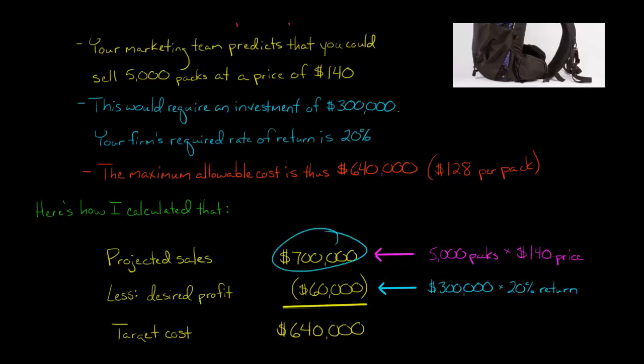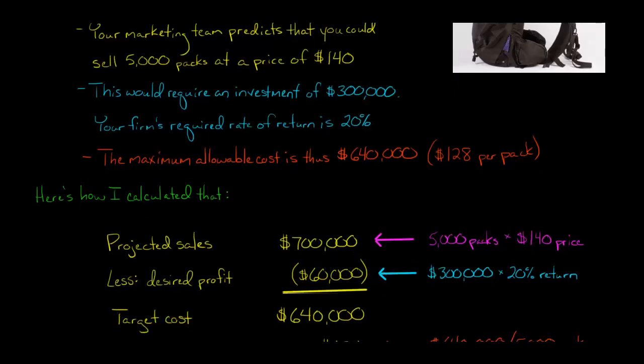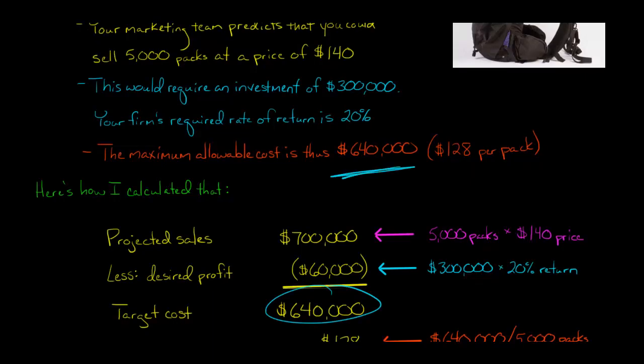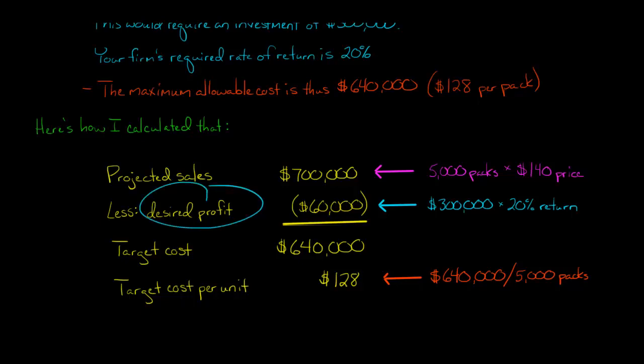This is our sales, $700,000. The desired profit, $300,000 of capital at 20% rate of return. Our company is saying if we do this, we want to have a profit of at least $60,000. So if we're going to do $700,000 in sales and we want to have at least $60,000 in profit, that means the target cost, the maximum allowable cost is $640,000. That's our sales minus the profit, that's going to back out what the cost can be. If the cost is more than $640,000, then it has failed. We are not going to achieve our desired level of profit.